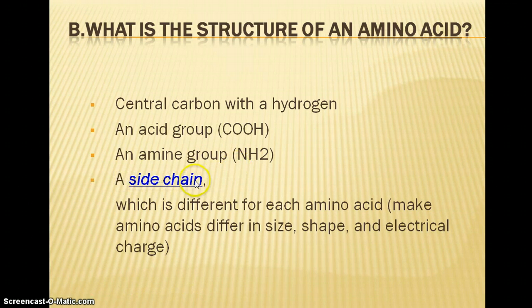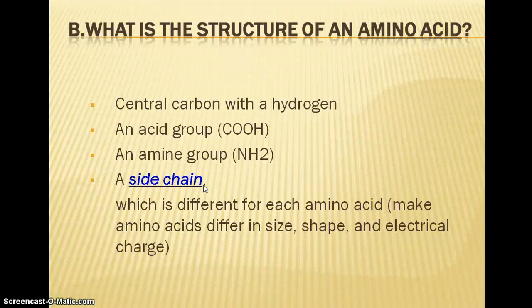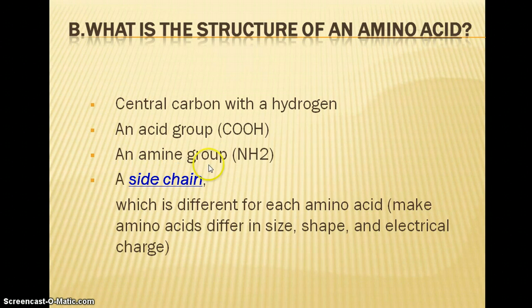Every amino acid will also have a side chain, sometimes referred to as an R group. This side chain is going to be different for each amino acid, and this is what gives each amino acid its different identity — its different size, shape, and electrical charge. This will impact the shape of the protein depending on which amino acids are bonded together. The top three characteristics are always similar; the side chain is what differs between amino acids.